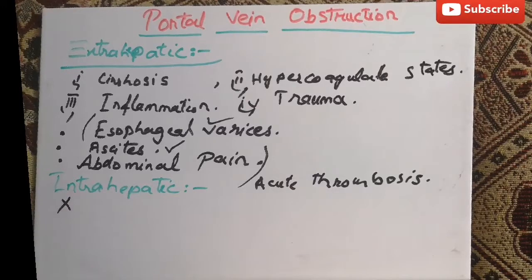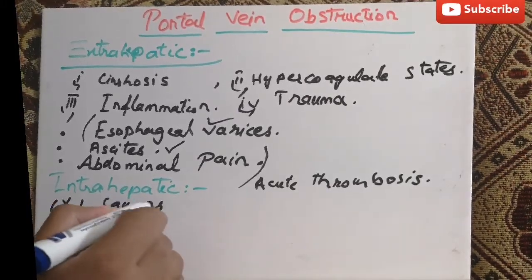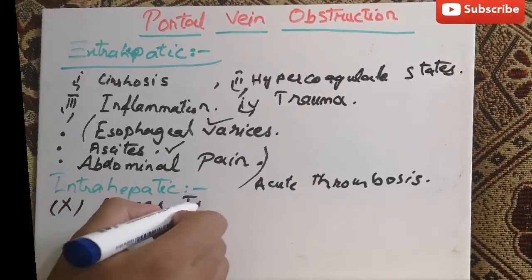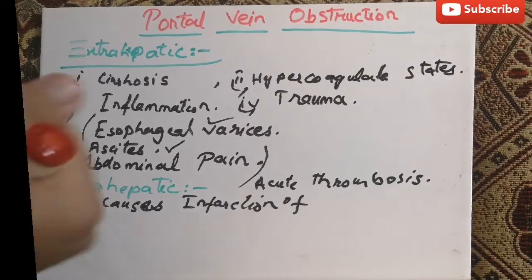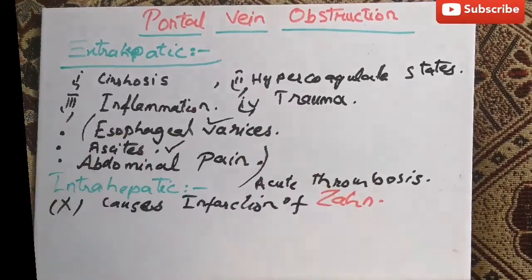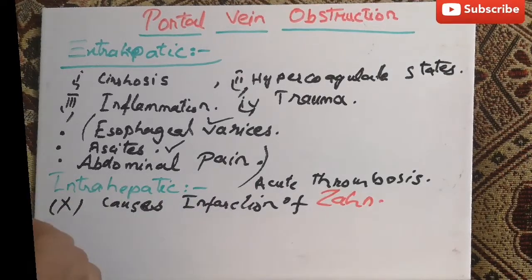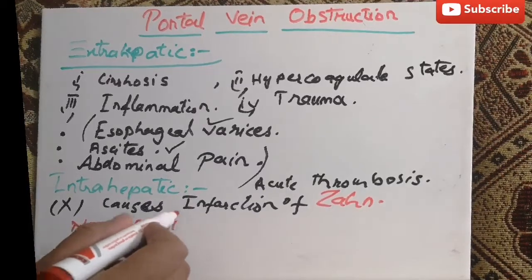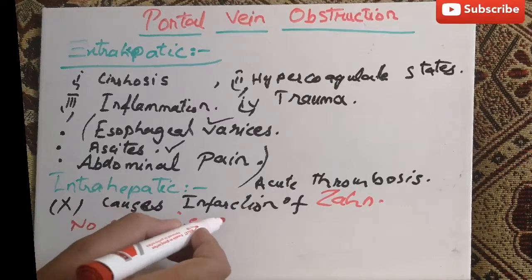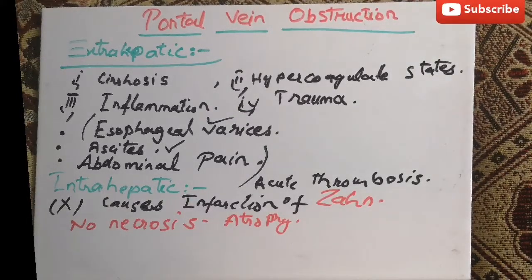Instead, it causes a Zahn infarct — a sharply demarcated reddish-blue area toward which the intrahepatic portal vein obstruction occurred. There is no necrosis in this case, but hepatocellular atrophy can occur.